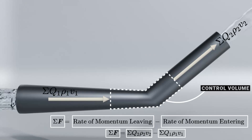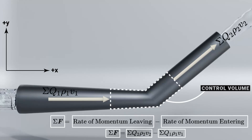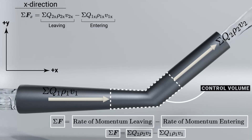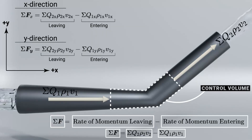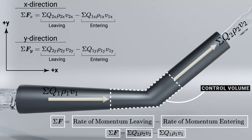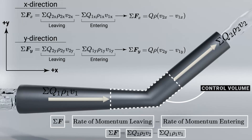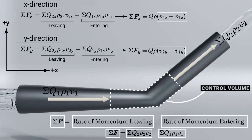For convenience, we're going to break down the impulse and momentum principle into the classic x and y directions. In the x direction, the sum of forces equals the rate of change of momentum leaving the control volume in x minus the rate of change of momentum entering in x. The same applies in the y direction. We can then factor out the flow rate and density, since those remain constant, leaving us with the change in velocity: v2 (leaving the control volume) minus v1 (entering the control volume).